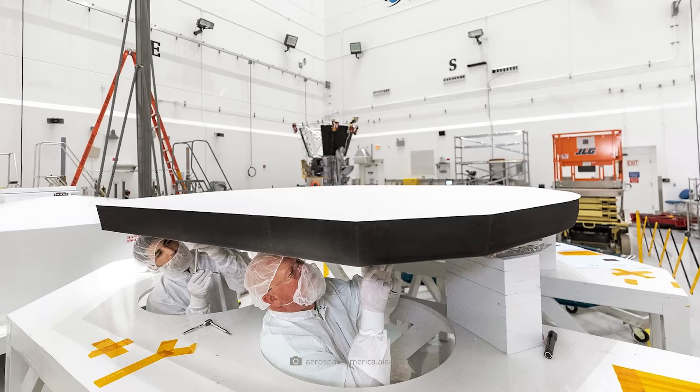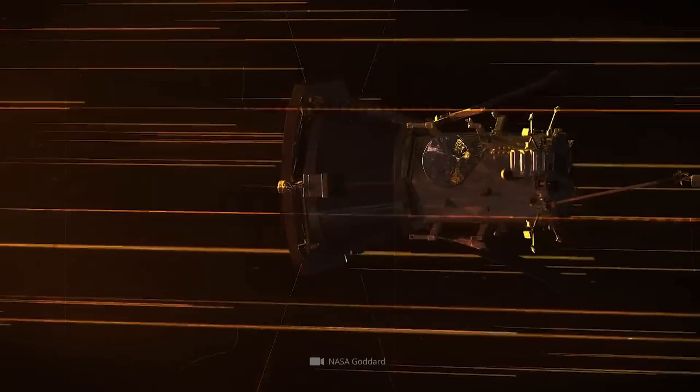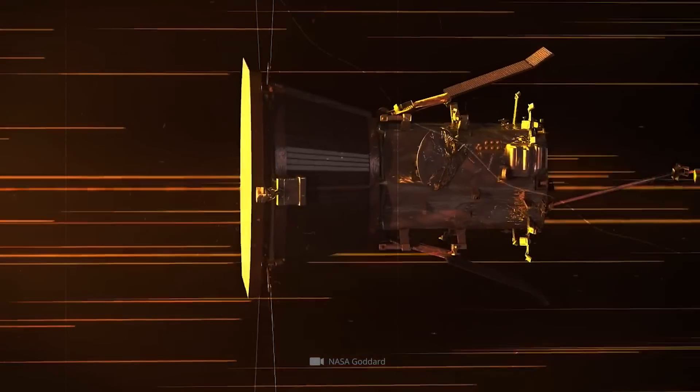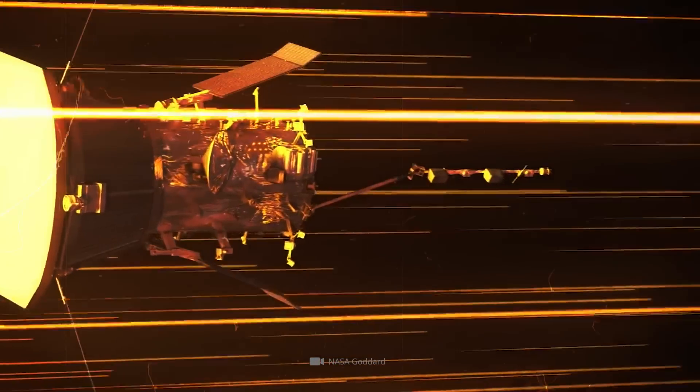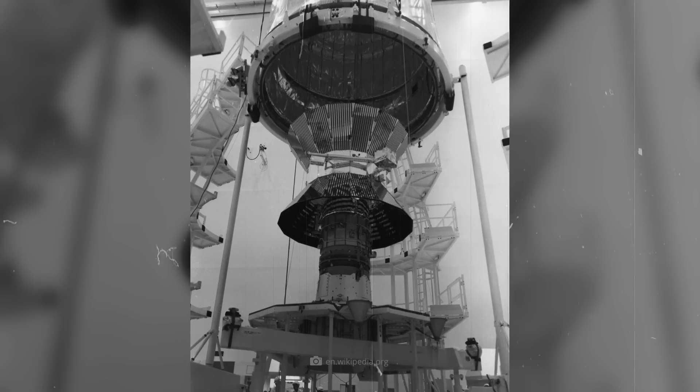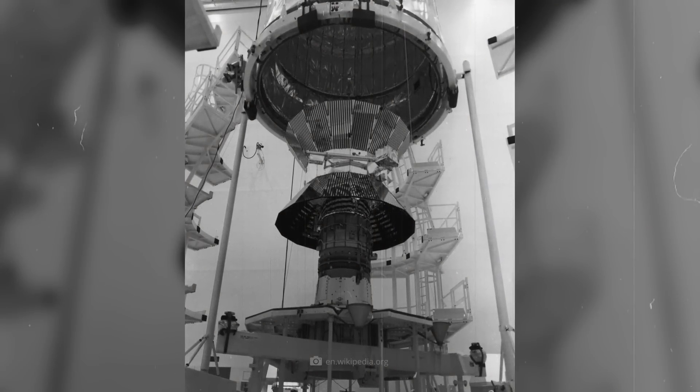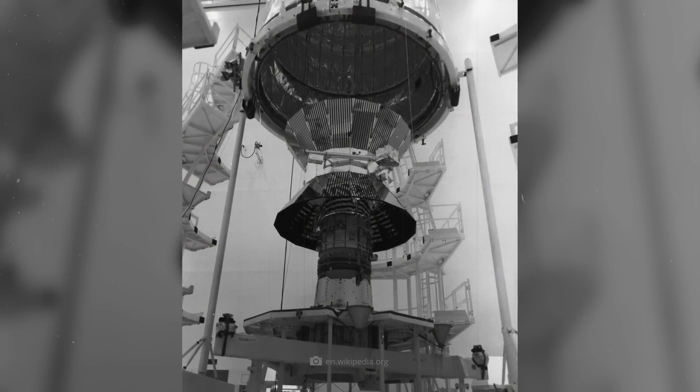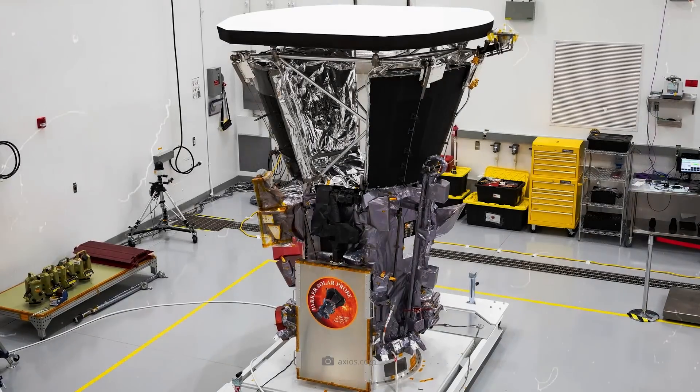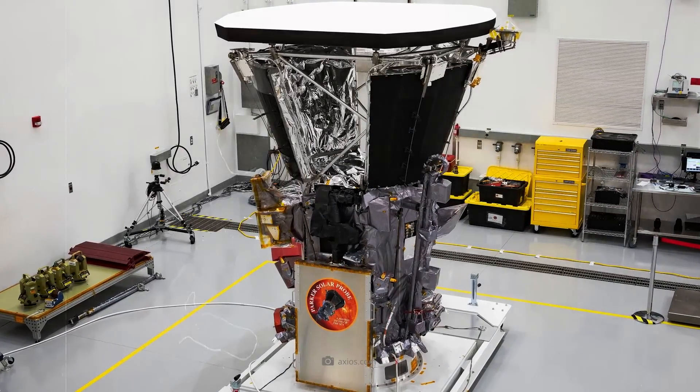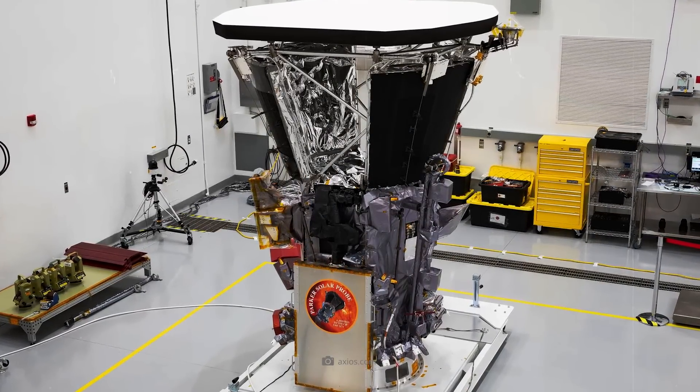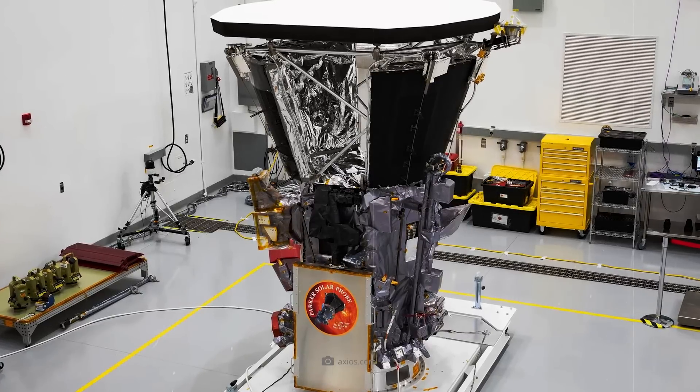And yet, this would still be hot enough to turn all unprotected parts, especially the sensitive measuring instruments, into a pile of ashes. To prevent this from happening, the approximately 3 meter high and almost 2.5 meter wide probe was equipped with a 2.5 meter wide and 12 centimeter thick heat shield made of carbon foam, which in turn is embedded in two carbon plates.